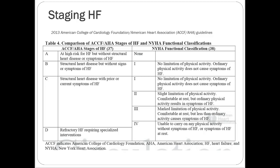Staging heart failure: the ACC/AHA stages versus the New York Heart Association functional classifications are very similar — they just stratify differently using letters or Roman numerals. Stage A is somebody at high risk without structural heart disease — maybe an alcoholic or someone with chronic hypertension. Stage B or Class 1 is no limitation on physical activity but with some structural heart disease; you don't really treat these people. Stage C and Classes 2 through 4 are where you're going to see treatment recommendations.